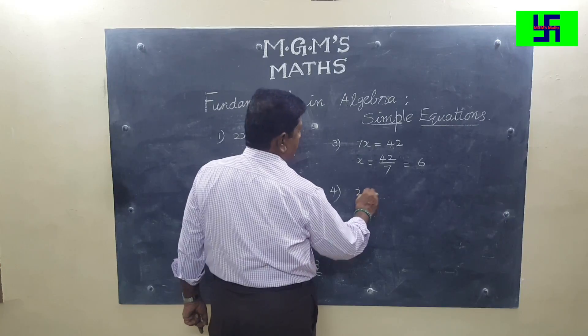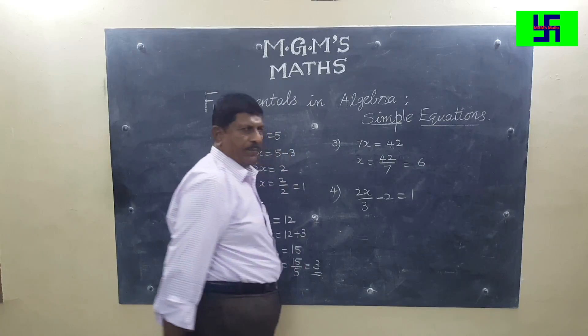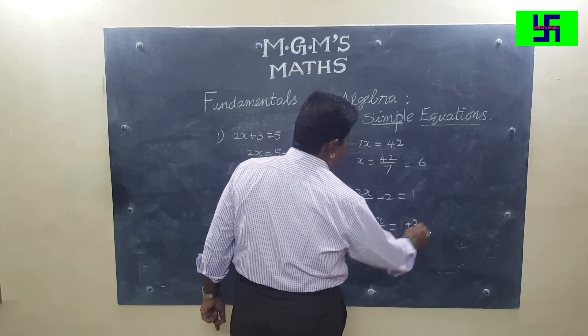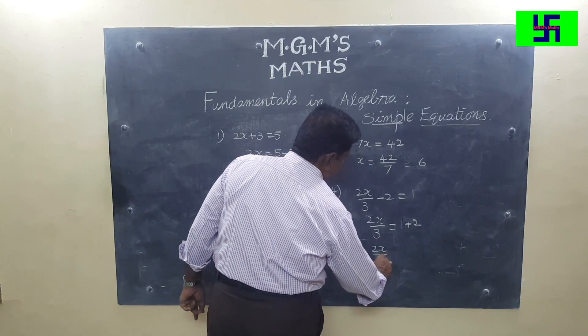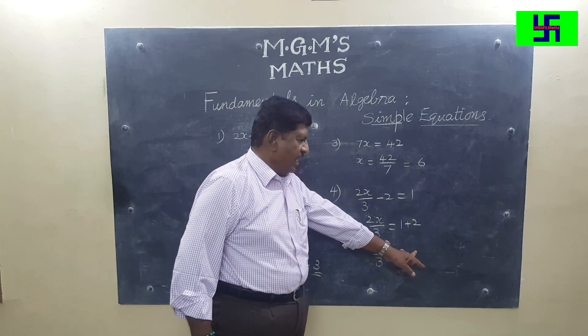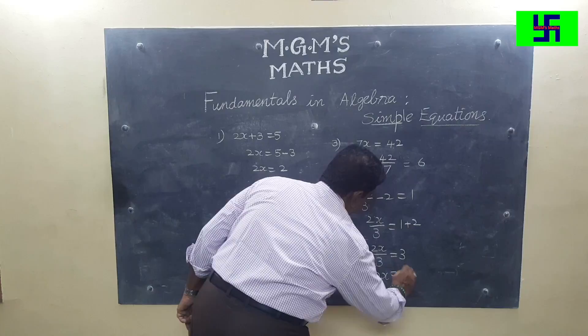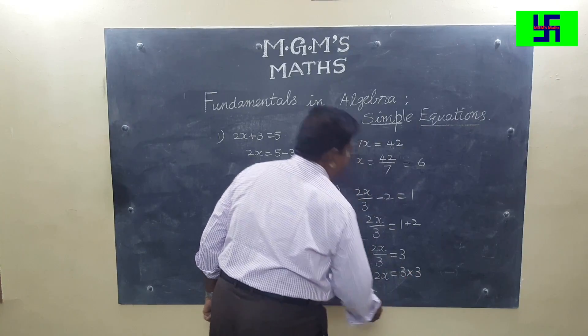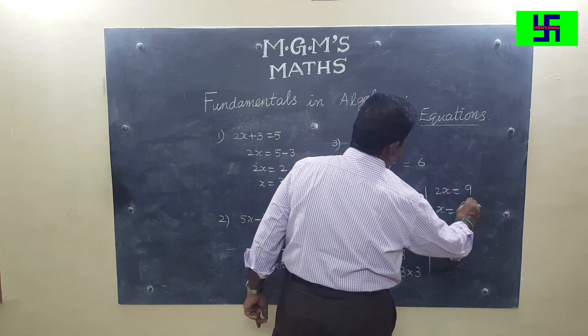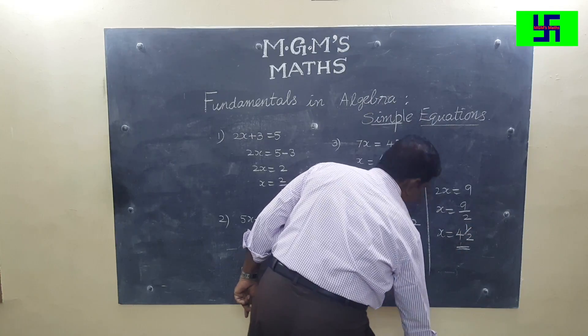Another problem: 2x upon 3 minus 2 is equal to 1. So 2x upon 3 is equal to 1 plus 2. 2x upon 3 is equal to 3. This 3 division, when taken to the other side, becomes multiplication. So you see 2x is equal to 3 into 3. 2x is equal to 9. x is equal to 9 upon 2, which is 4 and 1 upon 2.